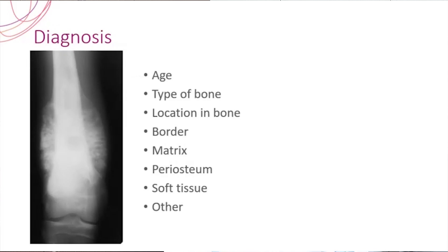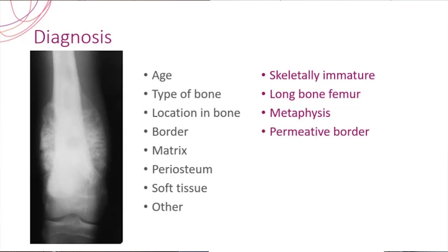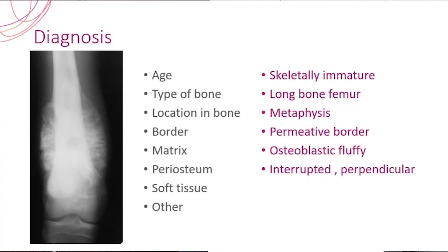Whenever this X-ray is given to you — an X-ray of this simplicity — a third-year MBBS graduate can very easily say this is a case of osteosarcoma. But from an orthopedician's end, when we are asking you to read this X-ray, we won't expect an abrupt answer like that. The presentation should go like: it is an X-ray of a skeletally immature patient showing the distal femur, proximal tibia and the knee joint — a long bone, femur. I could see a lesion arising from the metaphysis with a permeative border and an osteoblastic fluffy matrix and an interrupted perpendicular periosteal reaction showing a characteristic sunburst appearance and a Codman triangle at the above.